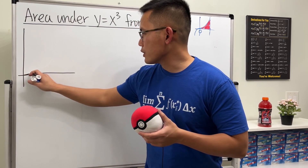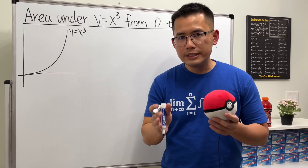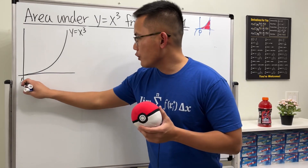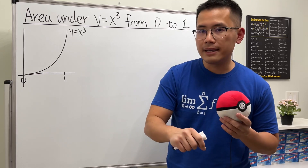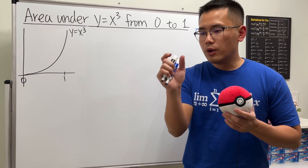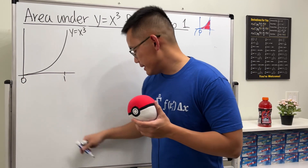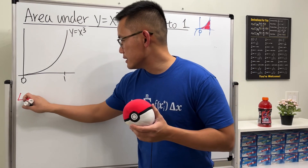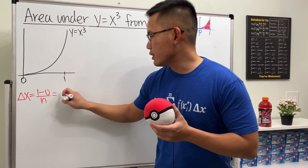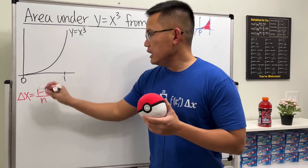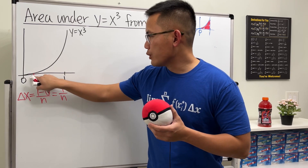Let's see just the first quadrant — y equals x to the third power. We will be using n equal-width rectangles. Because we are going from zero to one, the whole width is 1/n, so that's how wide each rectangle has to be. We denote that by delta x. Technically, delta x = (1 - 0)/n = 1/n.